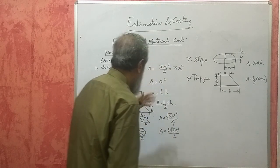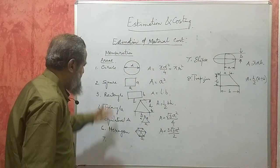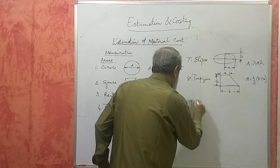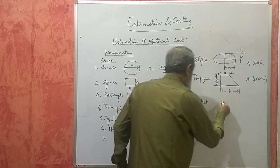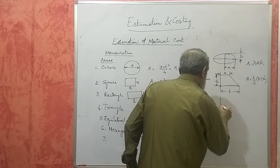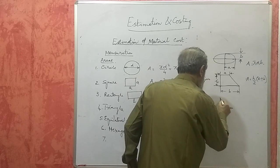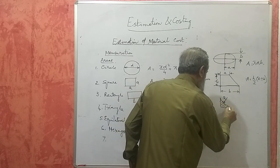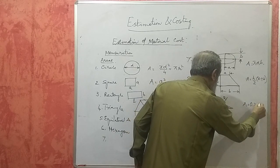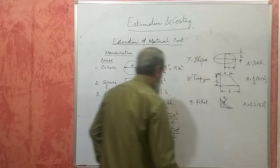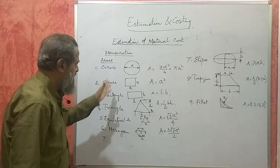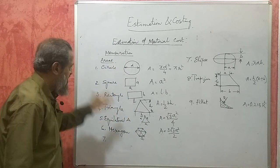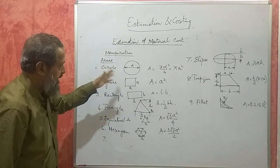These are some of the very commonly occurring figures whose areas we may have to find out. Also, the area of a fillet — which looks like this curved corner — its area will be found using the formula 0.215 r². These are the commonly occurring figures whose area formulas we are supposed to know. Now we will take up the volumes.